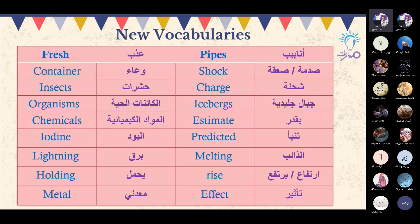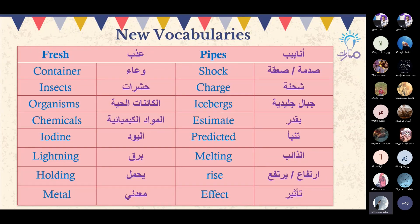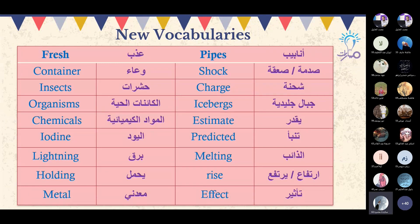Lujain, خالد, فضل. Fresh — عذب. Container. Organisms — الكائنات. Chemicals — المواد الكيميائية.